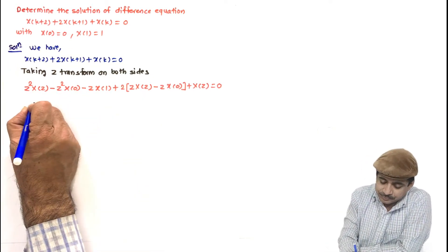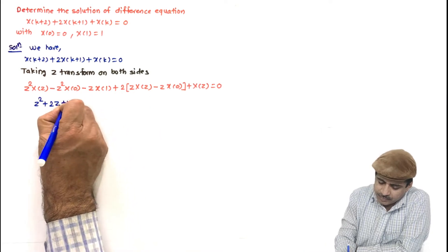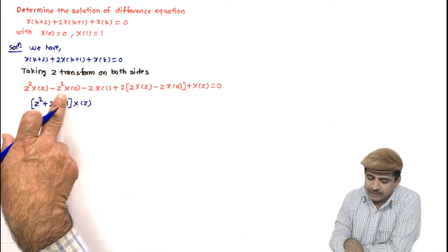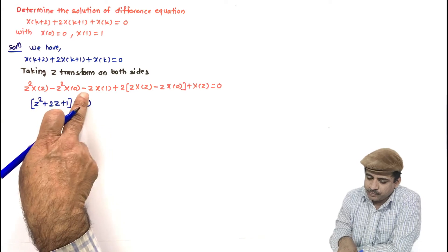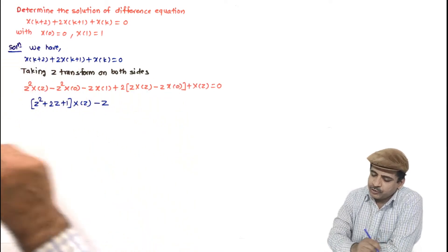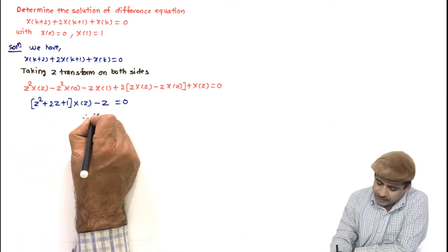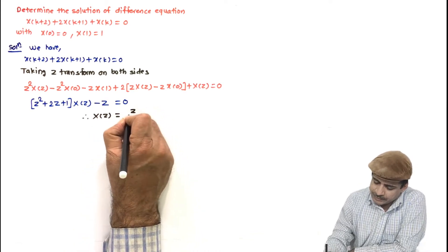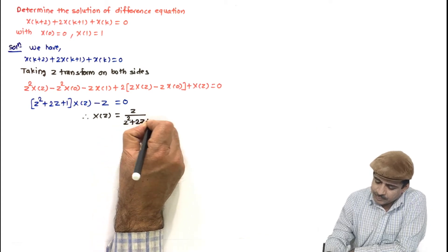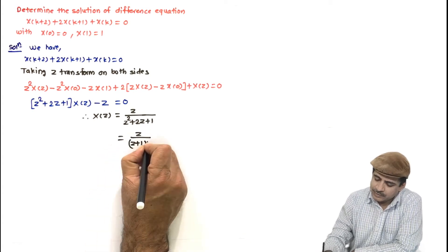Collecting terms, I get (z² + 2z + 1)·X(z) − z²·x(0) − z·x(1) = 0. Since x(1) = 1, we get minus z, and since x(0) = 0 this term vanishes. So X(z) = z divided by (z² + 2z + 1), which equals z / (z+1)².